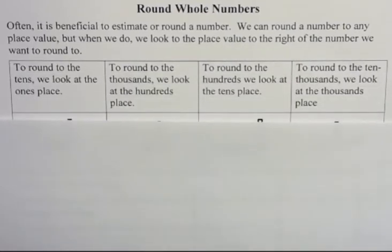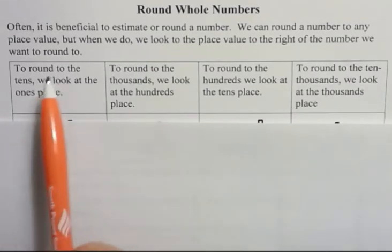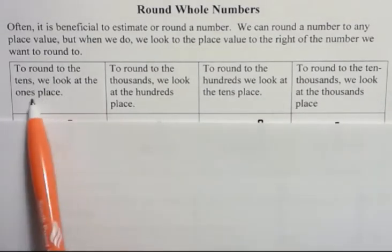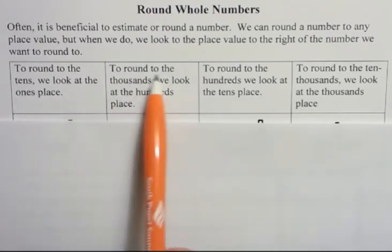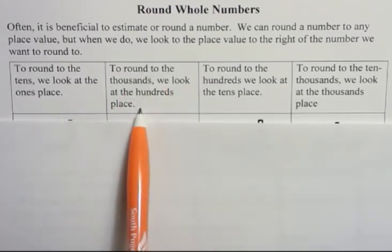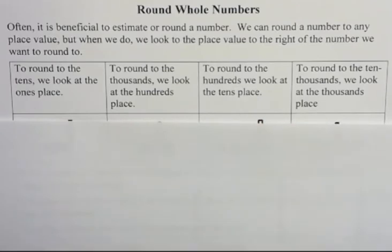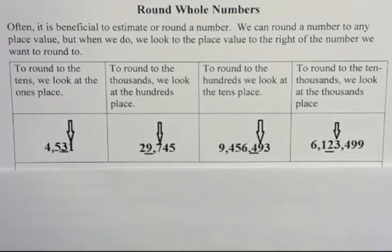That's a little confusing to say, but we're going to look at this. If we want to round to the tens place, we would look at the ones place because that would be directly to the right of where we want to go. Rounding to the thousands, we look at the hundreds place, and so forth. So let's take a look at what that looks like.